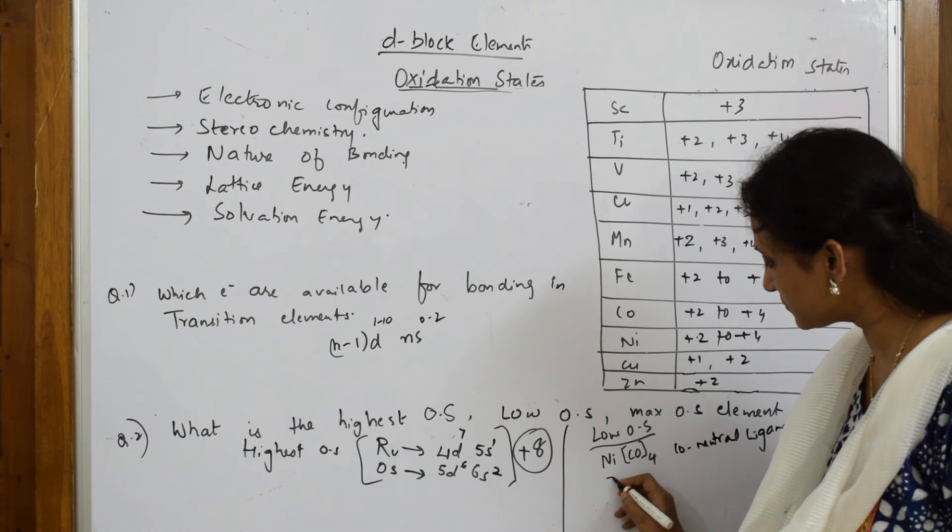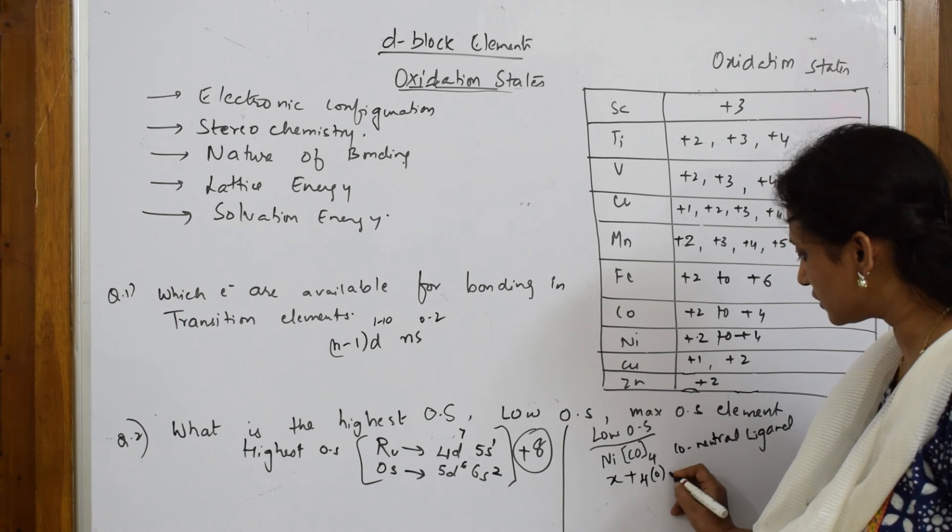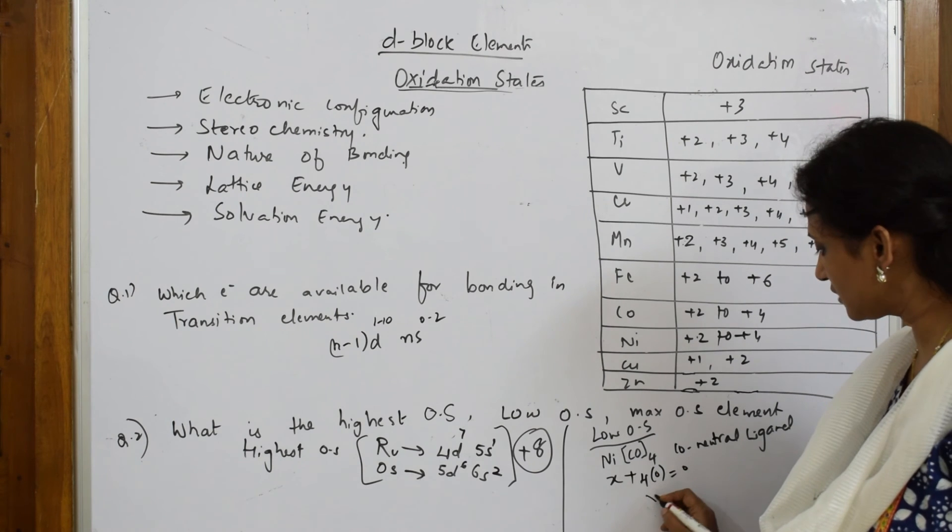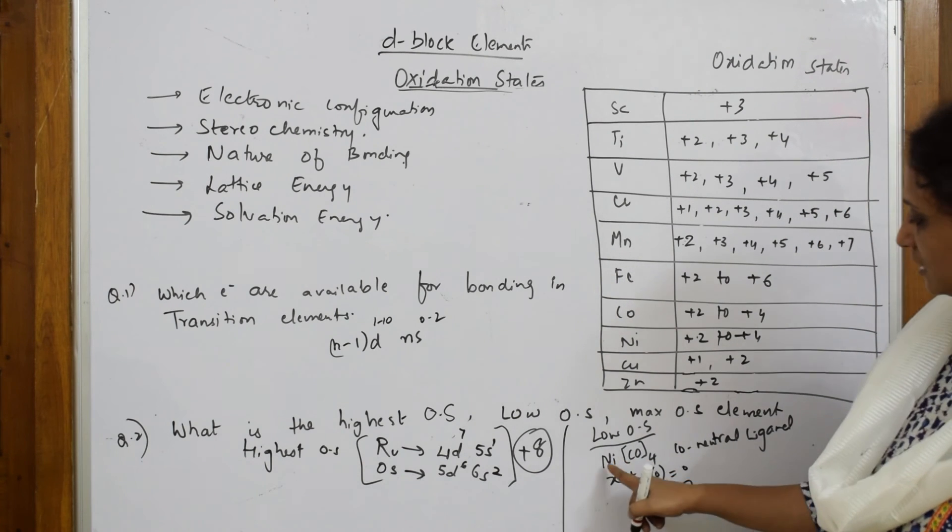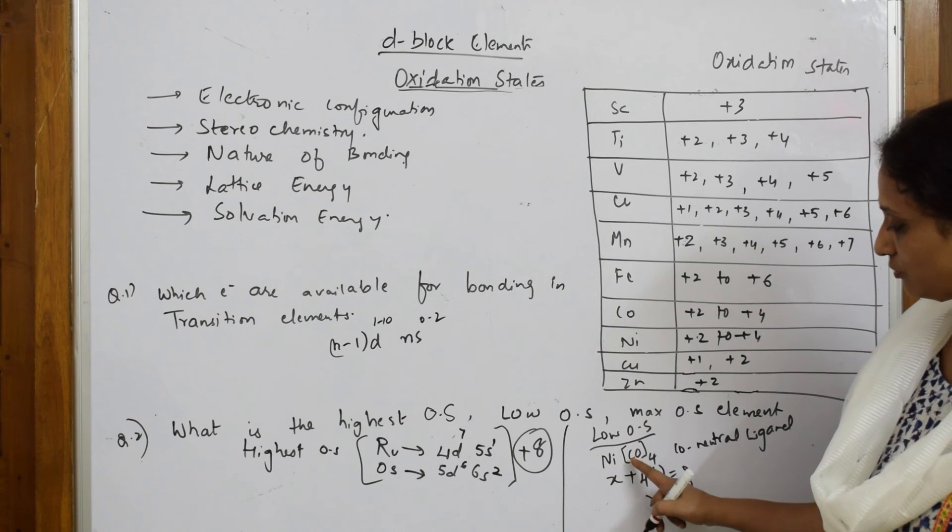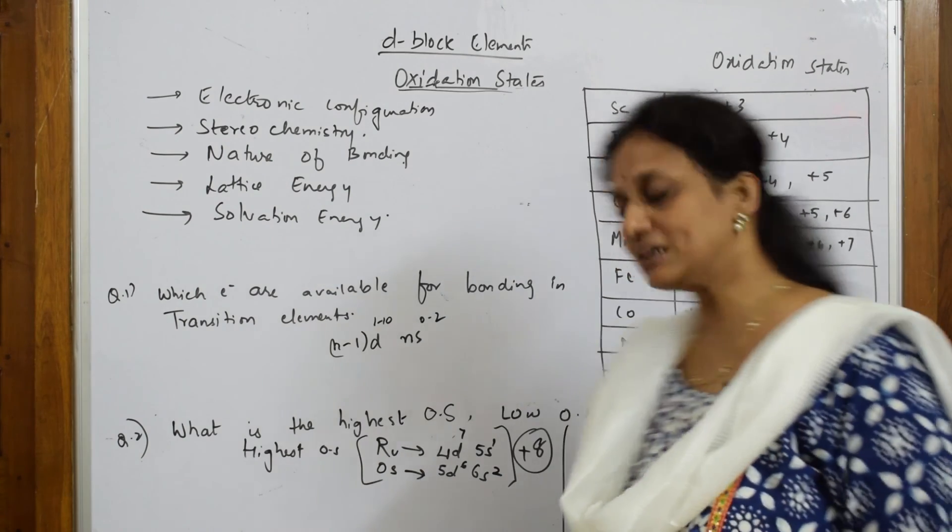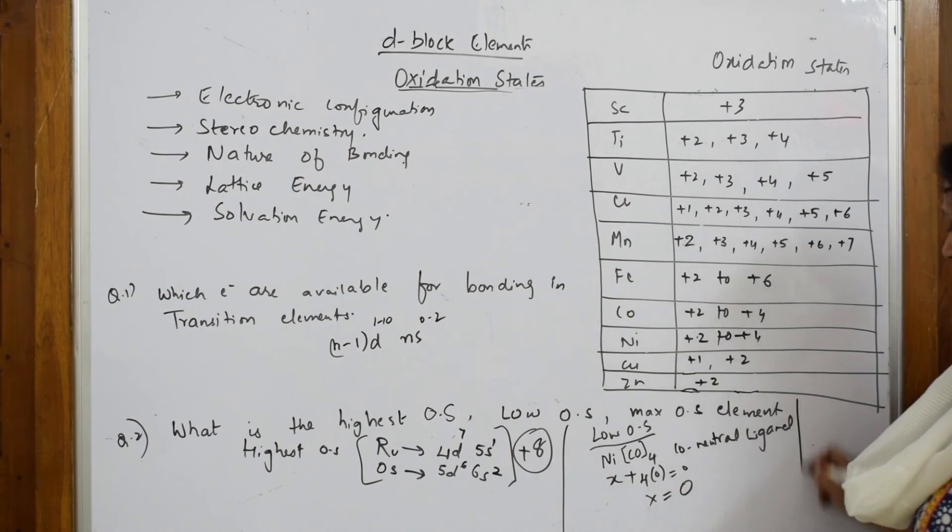How do I calculate? I'm going to take this metal as x plus 4 times 0 equals 0, so x equals 0. Nickel is the element with 0 oxidation state when it's in the form of a complex. The lowest oxidation state is shown by nickel in nickel tetracarbonyl.